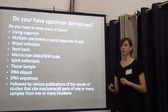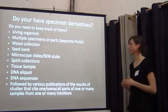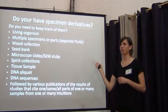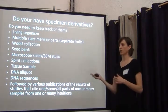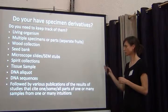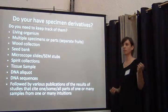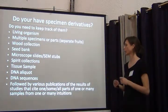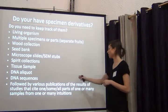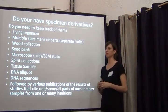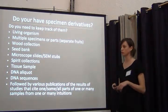Consider whether your specimens have derivatives and whether you want to keep track of them. When choosing a database system, think about living organisms, multiple specimens or parts — tissue samples, wood collections, seed banks, microscope slides, SEM stubs — and whether you want to track those. Also consider spirit collections, tissue samples, DNA sequences, and publications that cite your specimens. Do you want to tie all these pieces of information back to a single collection record in your database?